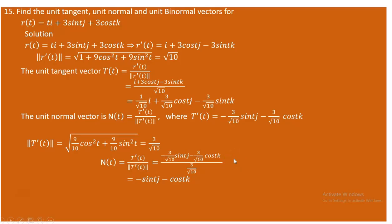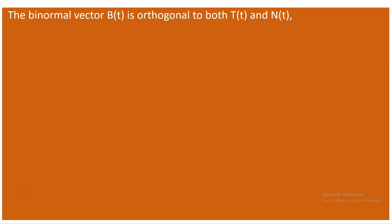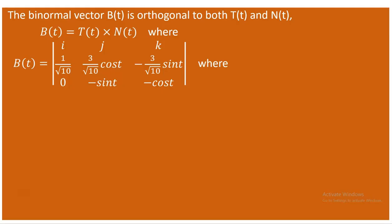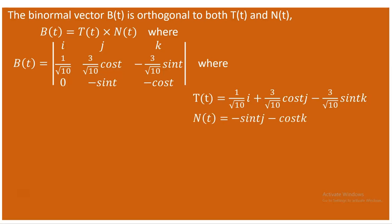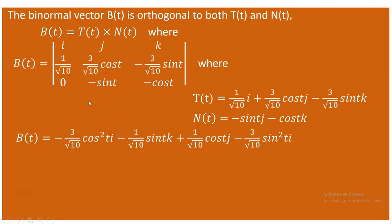Proceeding to find the unit binormal vector B(t), which is the cross product of the tangent and normal vectors. Since T and N are unit vectors, B is also a unit vector. Setting up the cross product with the i, j, k determinant: T(t) has components (1/√10, 3cos t/√10, −3sin t/√10) and N(t) has components (0, −sin t, −cos t).